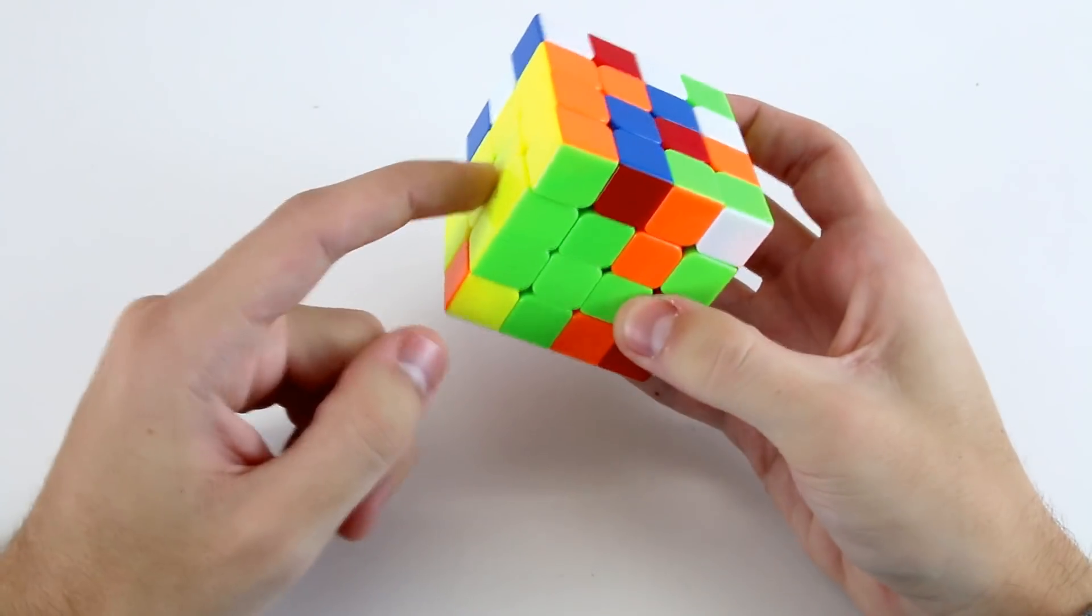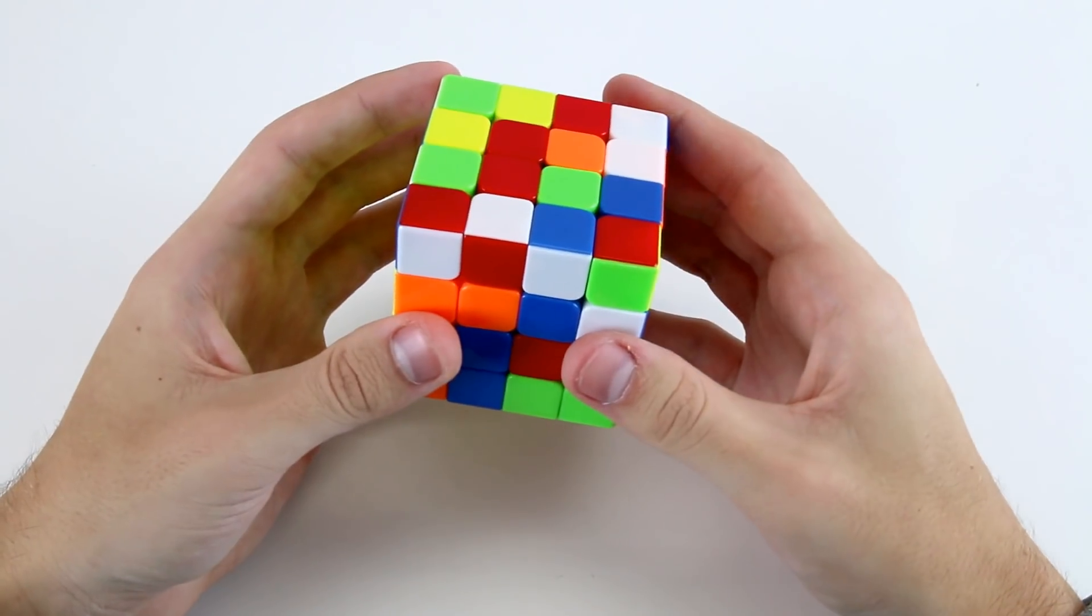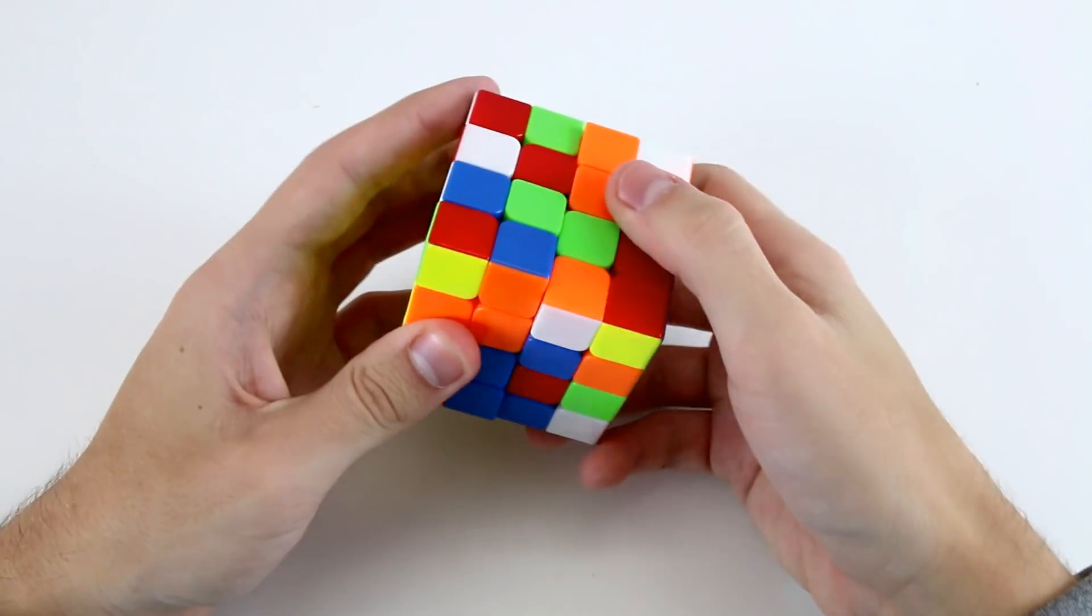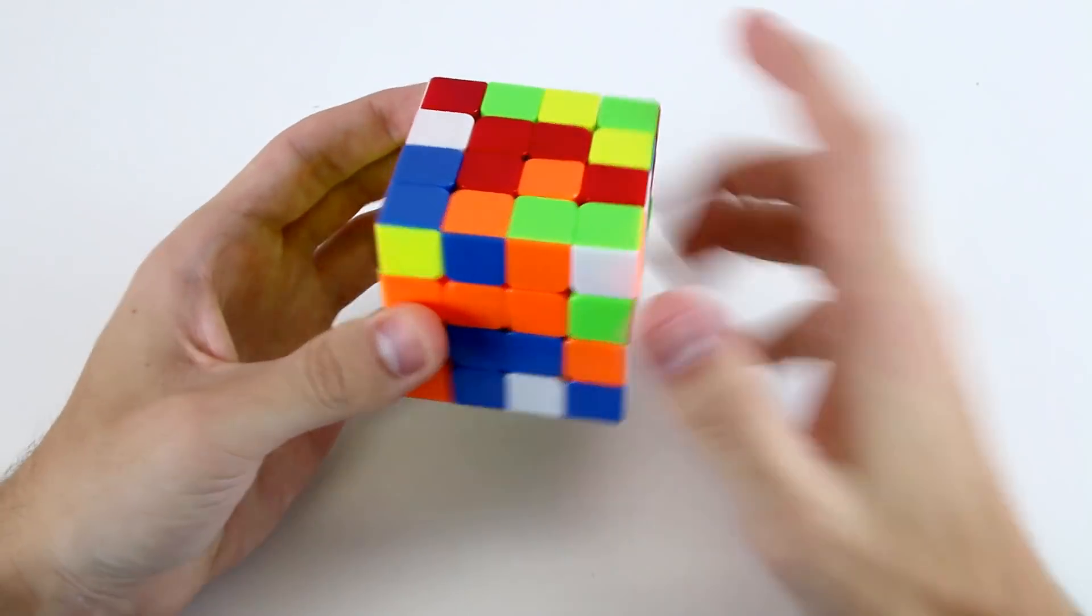And as I was doing those first three cross centers these three green ones were formed on the bottom here so what I can do is do u r to u prime and then r prime u r prime to get this orange one there.